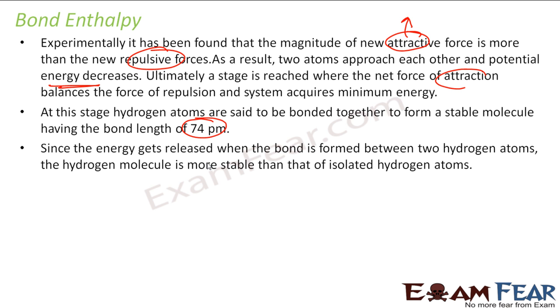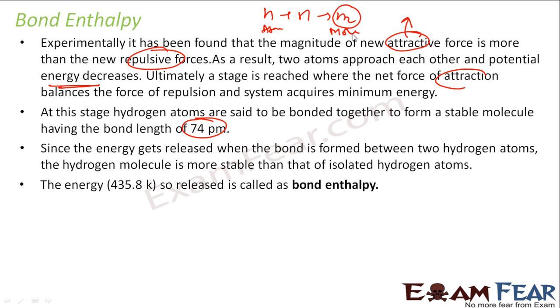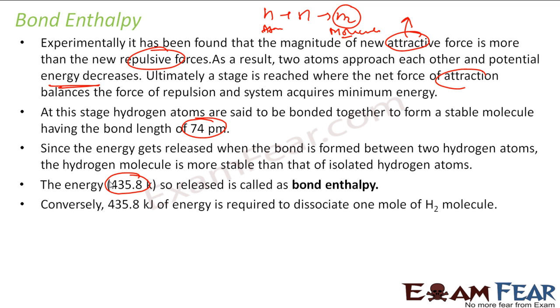Since energy is released, the H2 molecule is more stable than isolated hydrogen atoms. H2 atoms become a molecule and in this process energy is released, so this is more stable. This energy released is 435.8 kJ for one mole of hydrogen atoms, and this is called bond enthalpy.